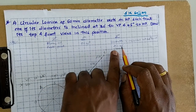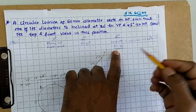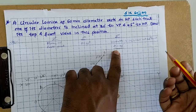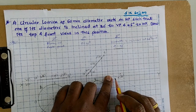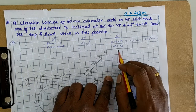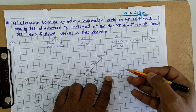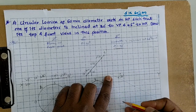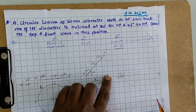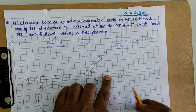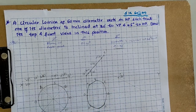Phi = 30 degrees is given. Measure below the XY line, keep the protractor here, and draw the 30-degree line below the XY line.